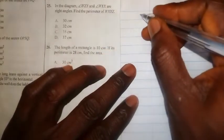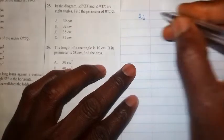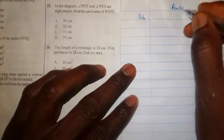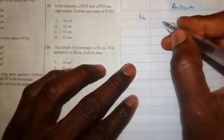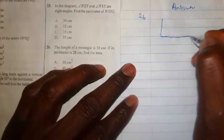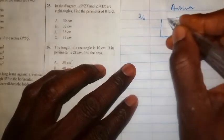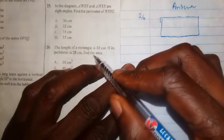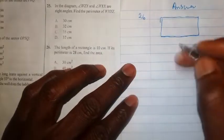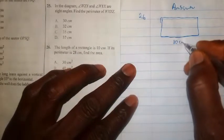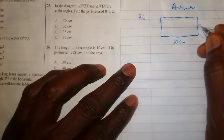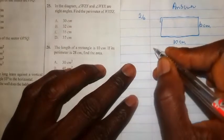First, we write the number 26 and we are taking the answer to this question. Now we draw our rectangle. We are told that the rectangle has a length of 10 centimeters, so we need the breadth which we are calling b centimeters.